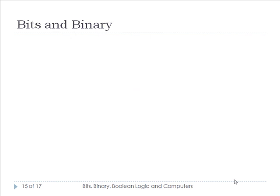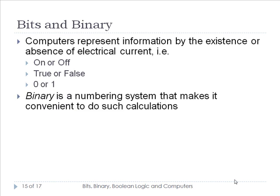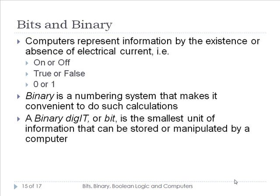Computers represent information by the existence or absence of electrical current or voltage — on or off, true or false, zero or one. Binary is a numbering system convenient for calculations with two elements: zero and one. A binary digit, or bit, is the smallest unit of information that can be stored or manipulated by a computer.